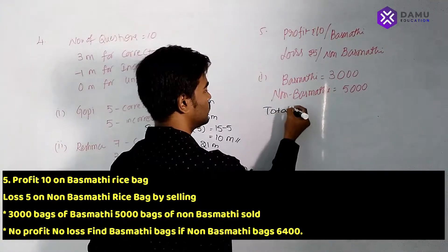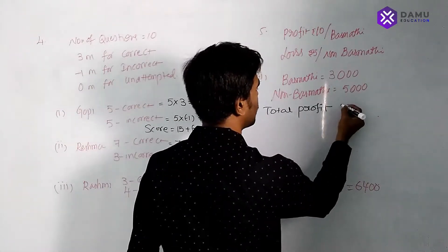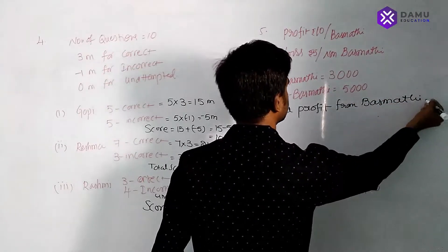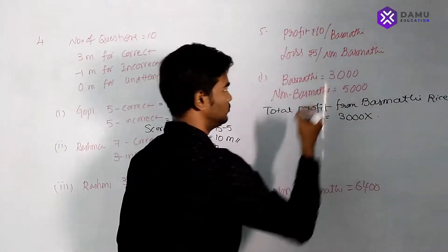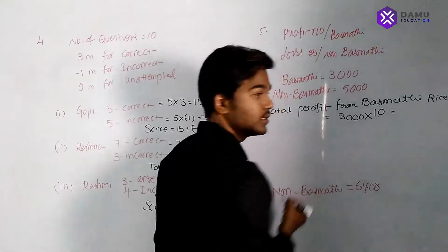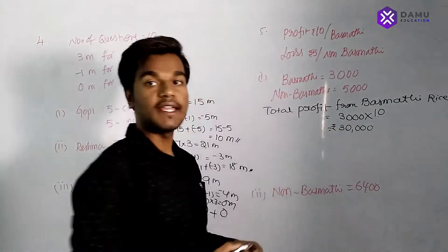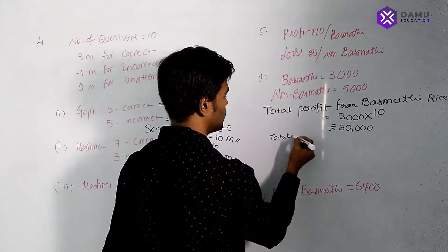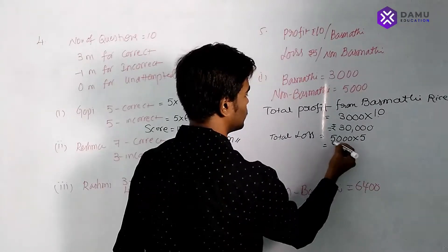We calculate total profit from basmati and total loss from non-basmati. Total profit from basmati rice: 3,000 bags into 10 rupees profit each is 30,000 rupees. Total loss from non-basmati rice: 5,000 bags into 5 rupees loss each is 25,000 rupees.